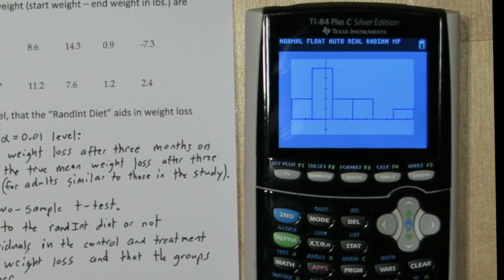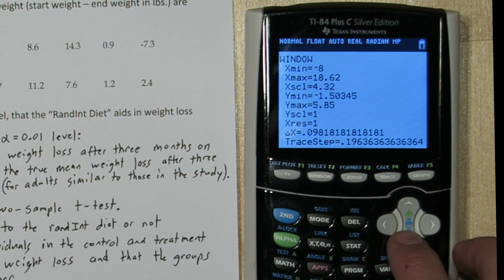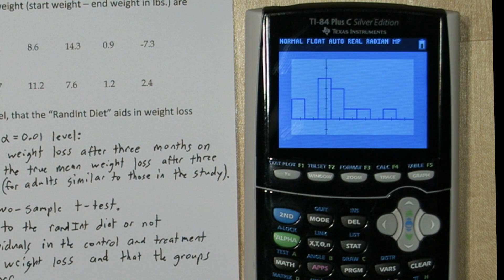Alright, it's unimodal, that's a good sign. It has a little bit of a skew, but I don't think it's anything major. Let's change the window setting to see if it looks any different. Alright, I don't think it's skewed right enough for us to disqualify it from being roughly normally distributed. So the control group's good.